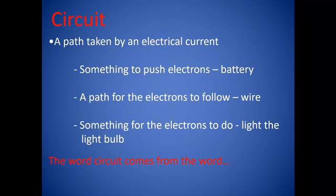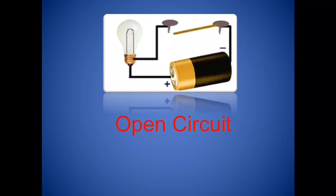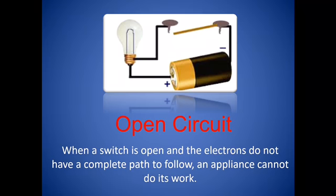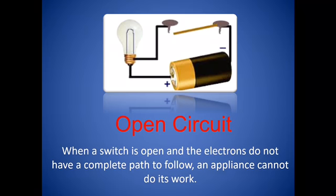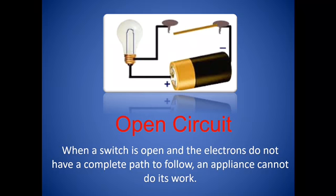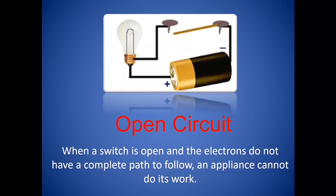A circuit is a path in which electrons flow. The word circuit comes from the word circle. This is an example of an open circuit. When a switch is open and the electrons do not have a complete path to follow, an appliance cannot do its work. You look at the top of your illustration, you will notice that there is a broken wire and this stops the electrons from completing its circuit.